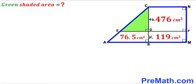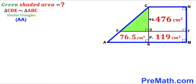Next, we consider two right triangles: the bigger right triangle ABC and the smaller green shaded triangle CDE. We can see that the corresponding angles are congruent, and both contain a 90-degree angle. Therefore, by the Angle-Angle similarity theorem, triangle CDE and triangle ABC are similar triangles.